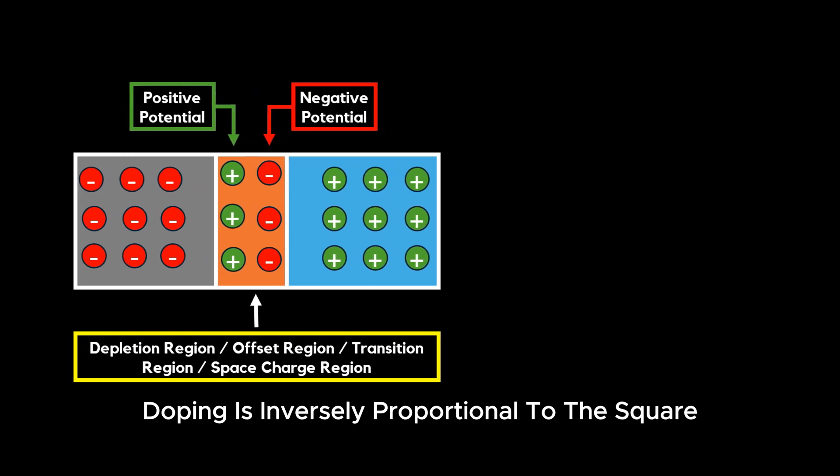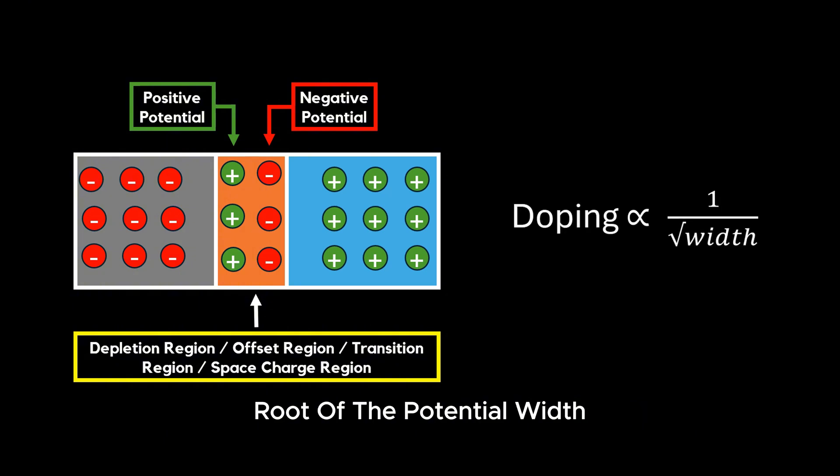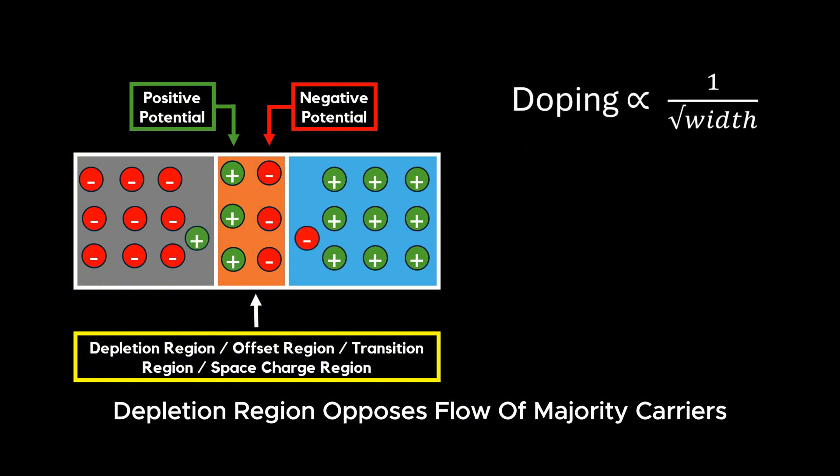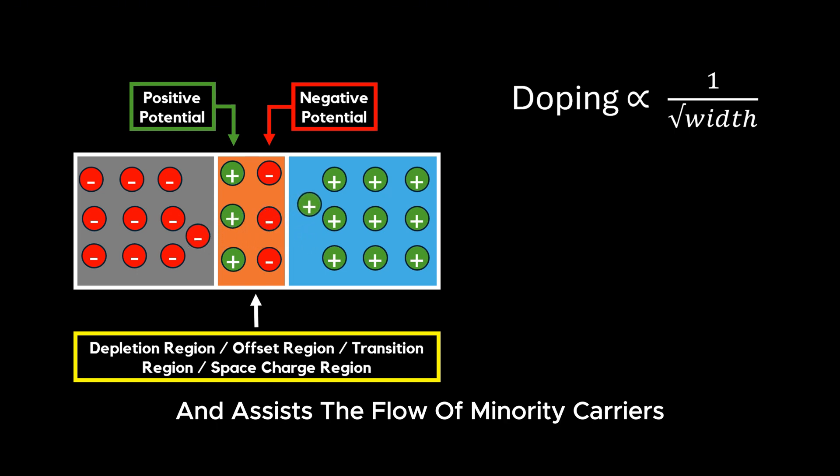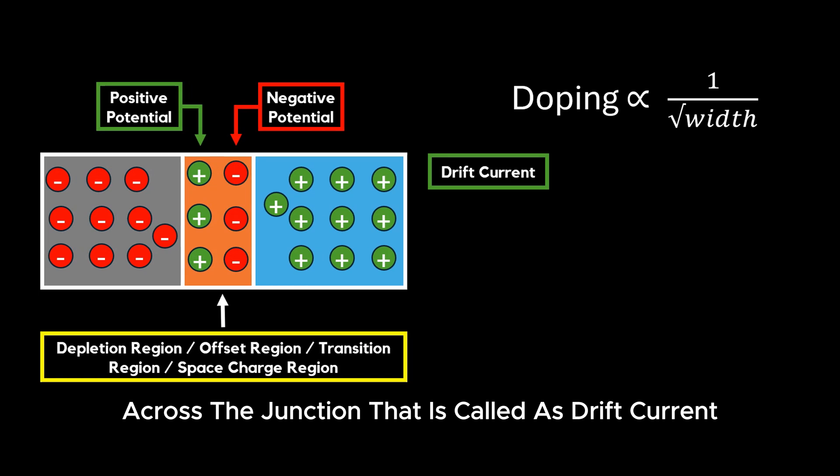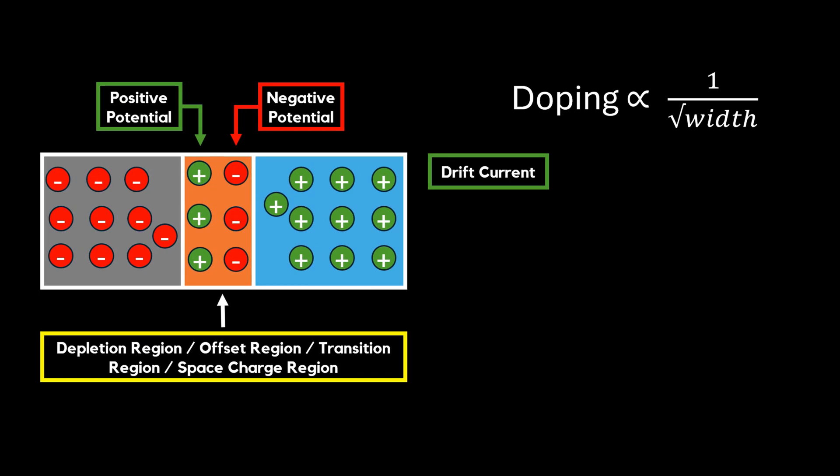Doping is inversely proportional to the square root of the potential width. The depletion region opposes flow of majority carriers and assists the flow of minority carriers across the junction, called drift current. The charge density ρ depends on the amount of doping.